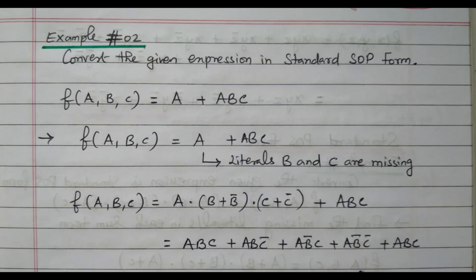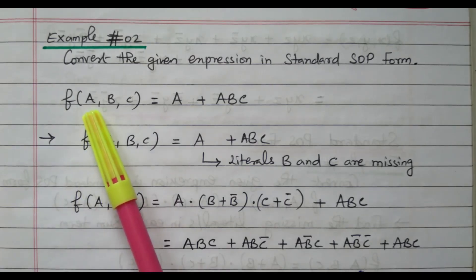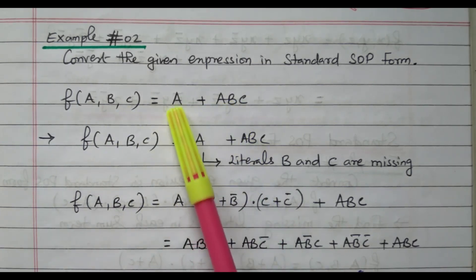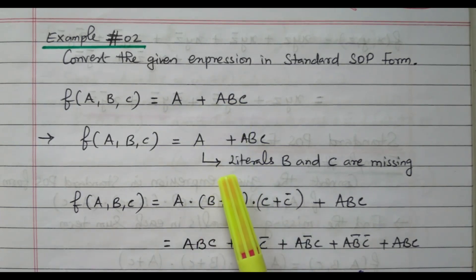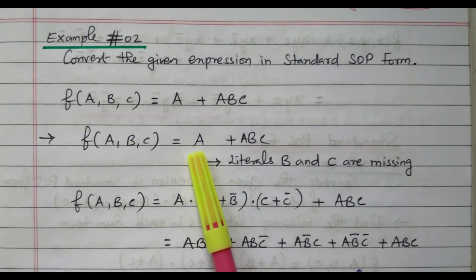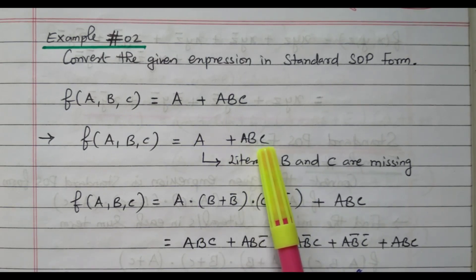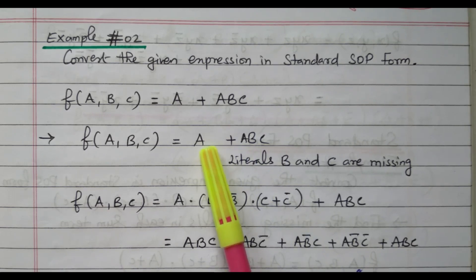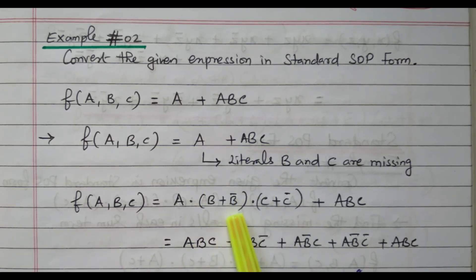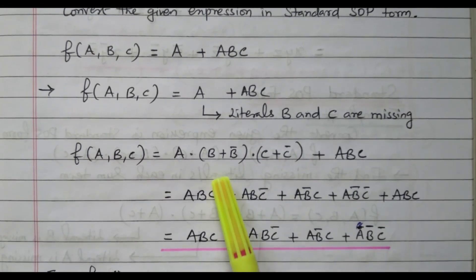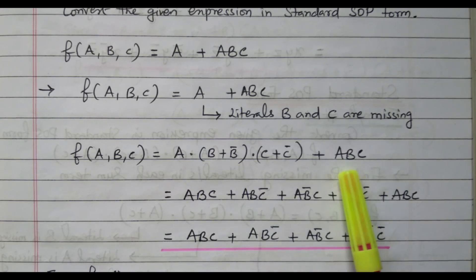In example two, F(A,B,C) = A + ABC. Two product terms are available: one is A, and another is ABC. We need to identify what literals are missing. In the first product term A, only A is available — B and C are missing. In the second term, all terms A, B, and C are available. So in the first term, we need to multiply with the missing literals — it is multiplied by (B + B̄)(C + C̄). B + B̄ = 1 and C + C̄ = 1, so the original value will not be affected.